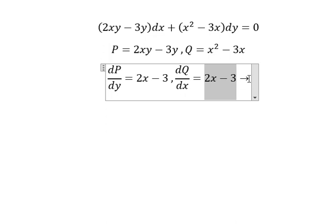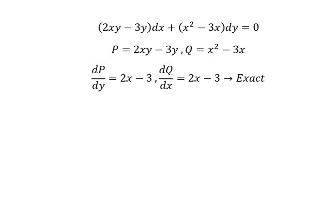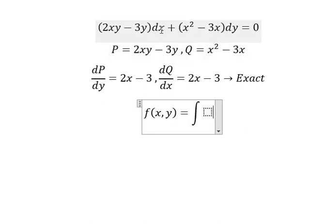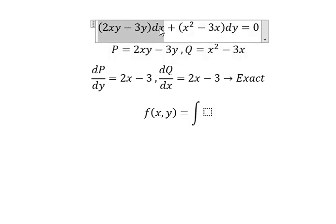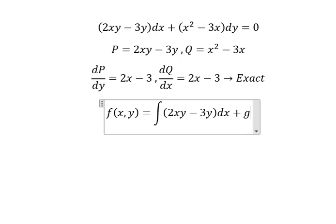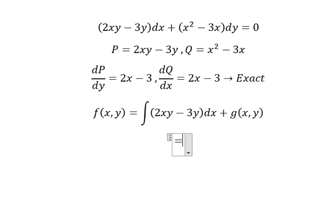Now we need to set up the function f(x,y) equals to the integration. So we see that we have dx, so I will integrate this one. The integration of 2xy minus 3y dx, we have x squared y minus 3xy plus g(x,y).